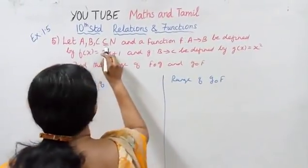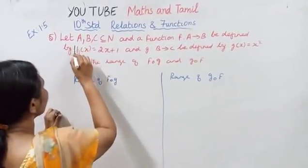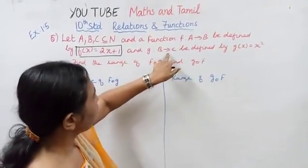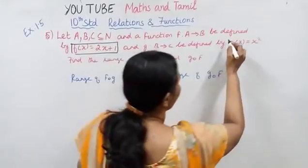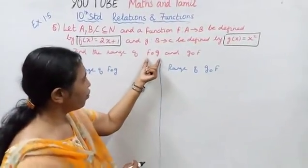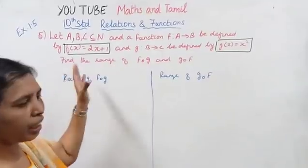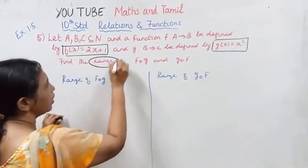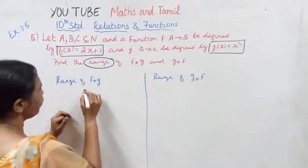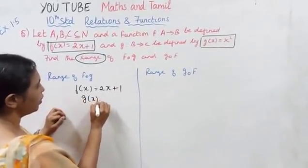Let a, b, c be subsets equal to natural numbers. The function f from a to b, we define f of x as 2x plus 1. And g from b to c, we define g of x as x square.